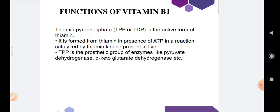TPP is the prosthetic group of enzymes like pyruvate dehydrogenase, alpha-ketoglutarate dehydrogenase, etc.